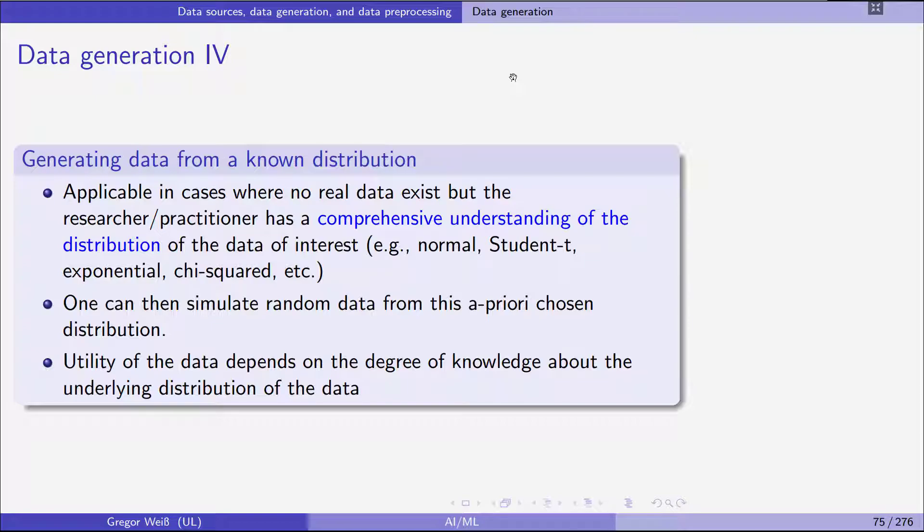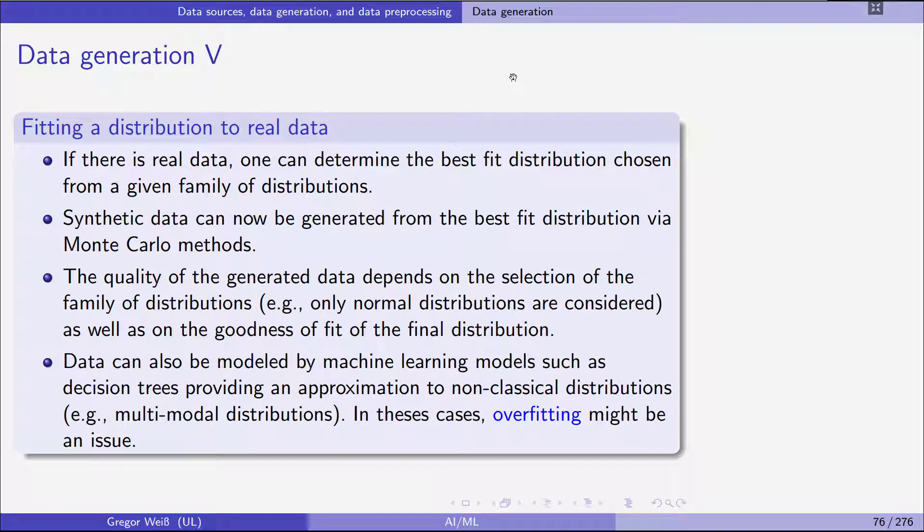And if we now take this to the real data, make an assumption, let's say, on the parametric form of the distribution, but we still estimate the parameters. If we fit the distribution to the data, then we get the second method. So if we have real data, you can determine the best fit distribution chosen from a given parametric family of distributions. Usually it's parametric. And you can then generate synthetic data by Monte Carlo simulation. The quality of the generated data obviously depends on, first of all, on the selection of the parametric form of the distribution, and also on the estimation. So we might want to try a goodness of fit test. We want to check how far the fitted distribution is from the empirical distribution function.